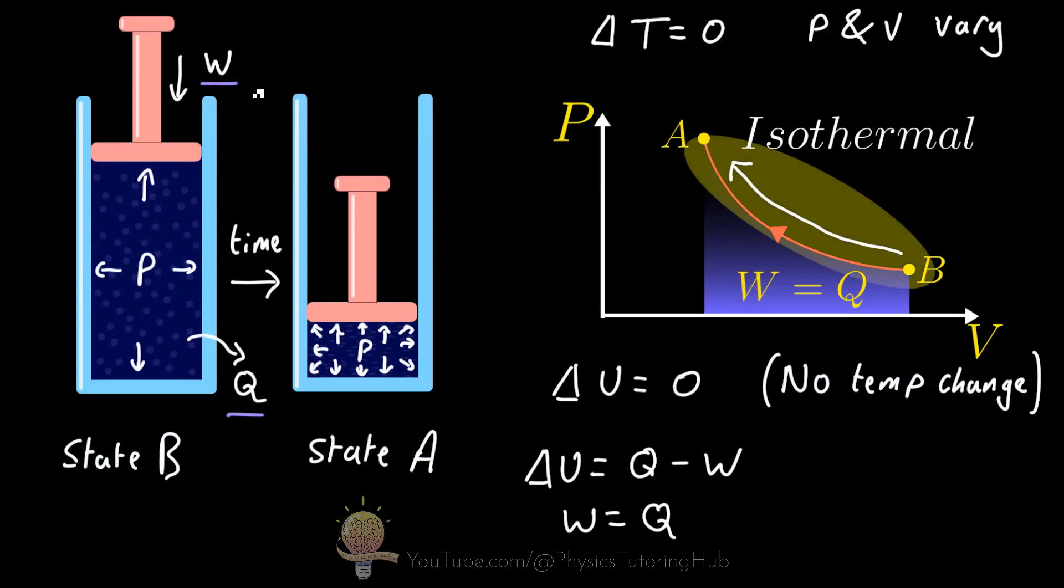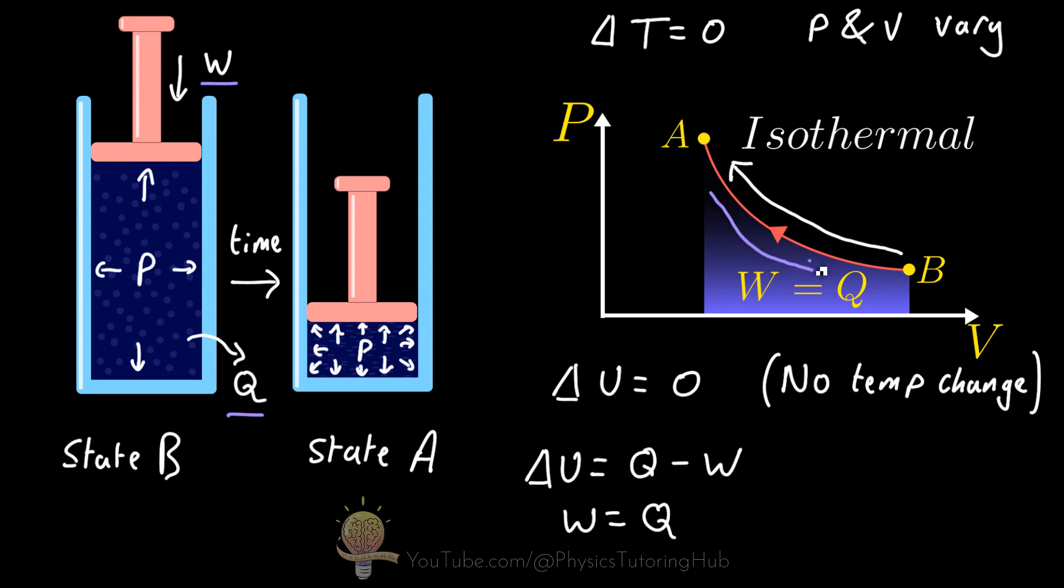Now this curve here is called an isotherm. And we can in fact find the equation of this line and integrate between points A and B. This will allow us to find the equation for the work done in terms of the change in volume between state A and state B.